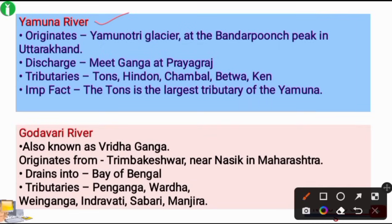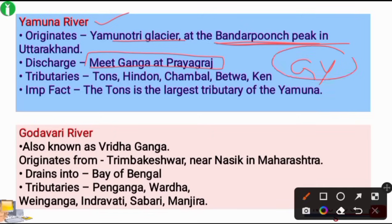The Yamuna River is a tributary of the Ganga River. Its source is the Yamunotri Glacier at the Bandar Poonch peak in Uttarakhand. It meets the Ganga at Prayagraj, whose old name was Allahabad. Although Yamuna is a tributary of Ganga, it has its own tributaries: Tons, Hindon, Chambal, Betwa, and Ken. The Tons River is the largest tributary of the Yamuna River.